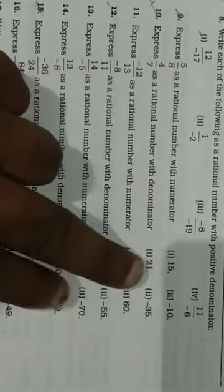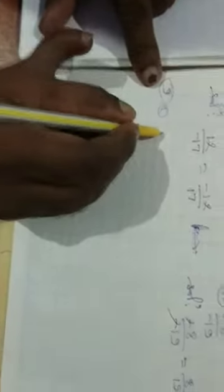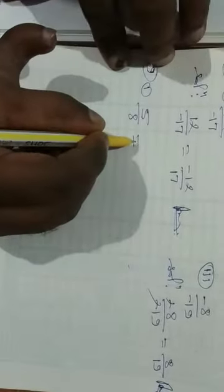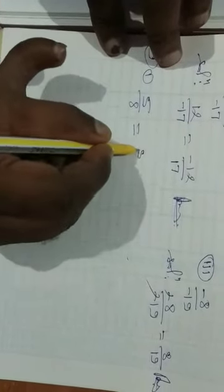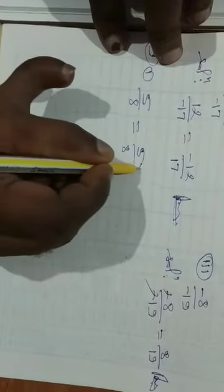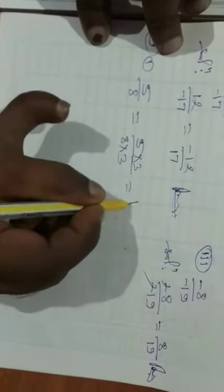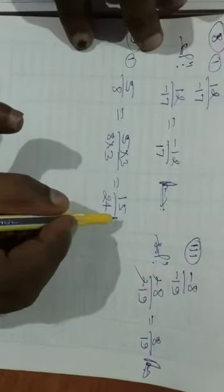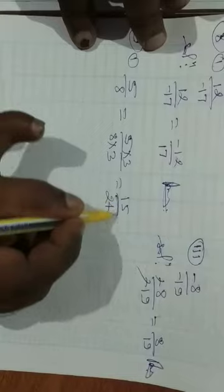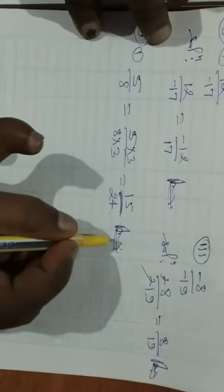Question number 9: Express 5 by 8 as a rational number with numerator 15. The required numerator is 15, so we multiply 5 by 8 by 3 because 5 × 3 equals 15. So 8 is also multiplied by 3: 8 × 3 equals 24. Therefore 15 by 24 is the required rational number.